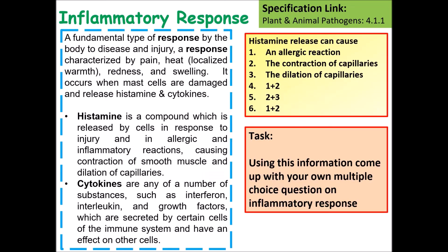Chemicals that help in the immune response include histamine. Histamine is a compound released by cells in response to an injury that raises the temperature, and it is often associated with allergic reactions. There are also cytokines, including different types such as interferon, interleukin, and other growth factors, which are secreted by certain immune cells and have effects on other cells.